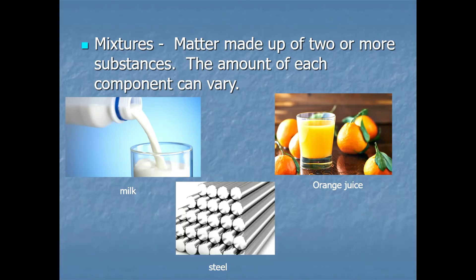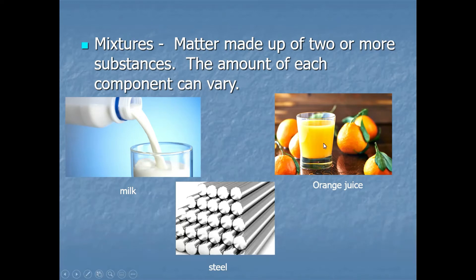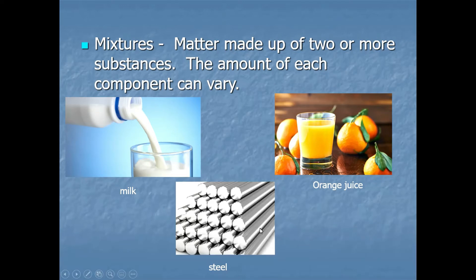Orange juice is also a mixture — it contains sugar, citric acid, and other substances, and you can vary how much pulp is in it and it's still orange juice. Steel is another example. When you have metal mixtures, they're called alloys. Steel contains iron, carbon, and nickel — it's a mixture of metals.